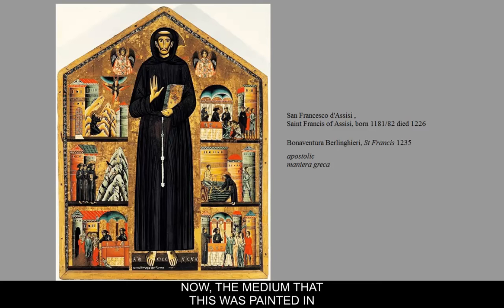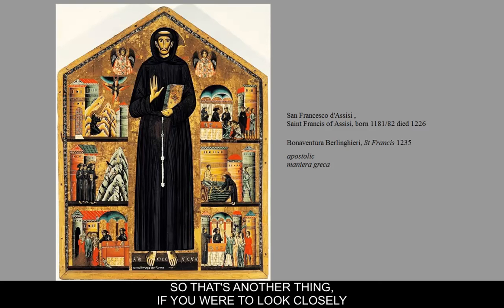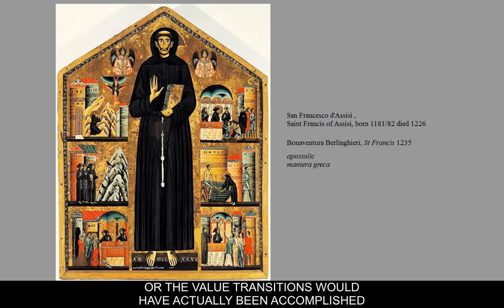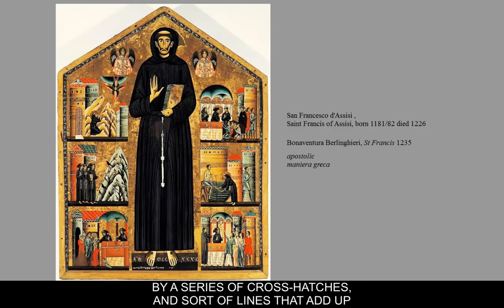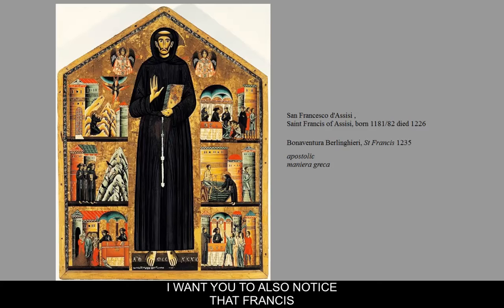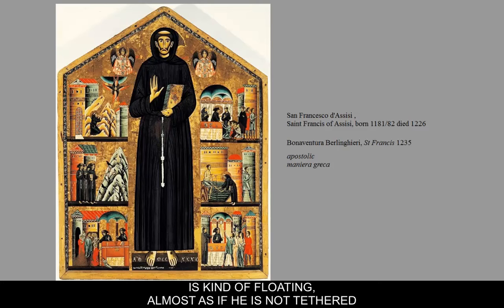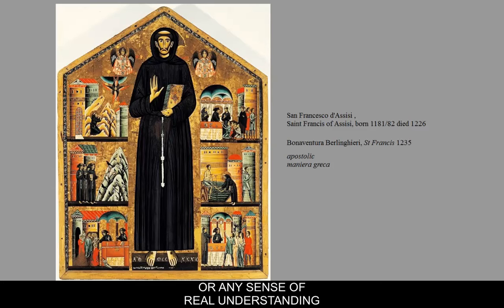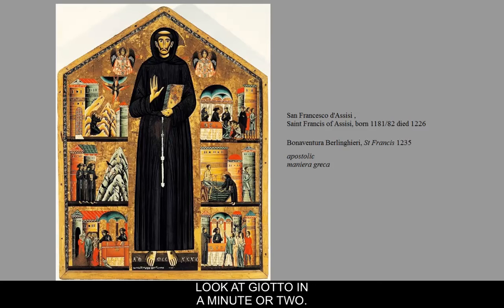The medium is tempera paint on a wooden panel. If you look closely, most of the modeling or value transition is accomplished through a series of cross-hatches and lines that suggest the form turning to create some shading — yet we don't have real shading and we're not sure where the light source is. Francis is floating almost, as if not tethered to the ground, with no sense of gravity or real understanding of anatomy.